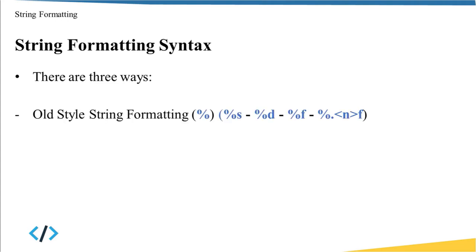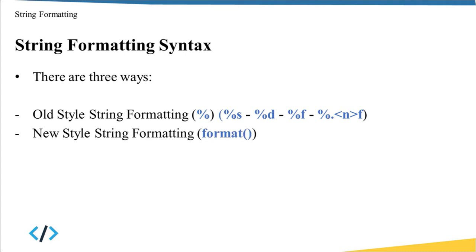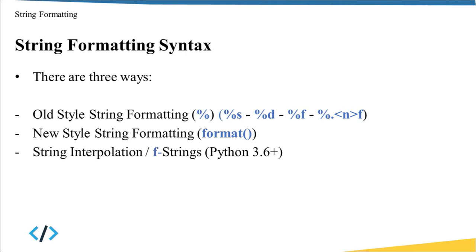There are three ways to create a formatted string in Python. The first is old style string formatting using the percentage sign, where you specify the value type — string, integer, or float — and for float you can control how many digits appear after the decimal point. The second way uses the new style with curly braces and the format function. The last way is string interpolation, or f-strings, where you add the letter f before the string.